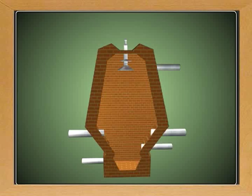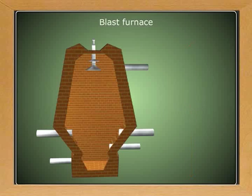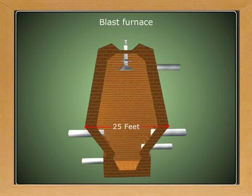The process of smelting takes place in a blast furnace. The blast furnace is a steel structure lined with fire bricks. It is about 100 feet in height and about 25 feet in diameter. It is slightly narrow at the top and the bottom.